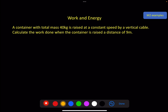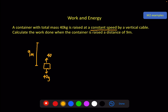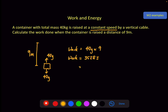Example: a container of total mass 40 kg is raised at constant speed by a vertical cable. Calculate the work done when the container is raised 9 metres. The weight is 40g; at constant speed the upward force equals the weight. Work done against gravity = 40g × 9 = 3528 joules. Since we used g = 9.8, we round to two significant figures: 3500 joules, or 3.5 kilojoules.